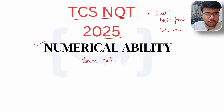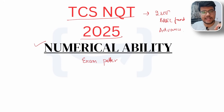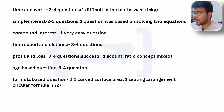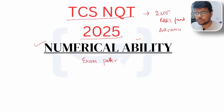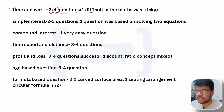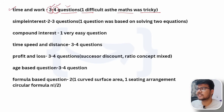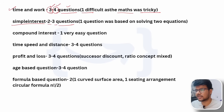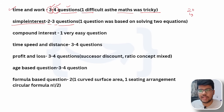We identified what topics were important and where questions came from in numerical ability. If you are new to this channel, please subscribe, like this video, and share it with your friends. Starting with numerical ability: time and work had three to four questions — three straightforward and one difficult. Simple interest had two to three questions. Out of 20 to 25 questions, you need to solve at least 10.